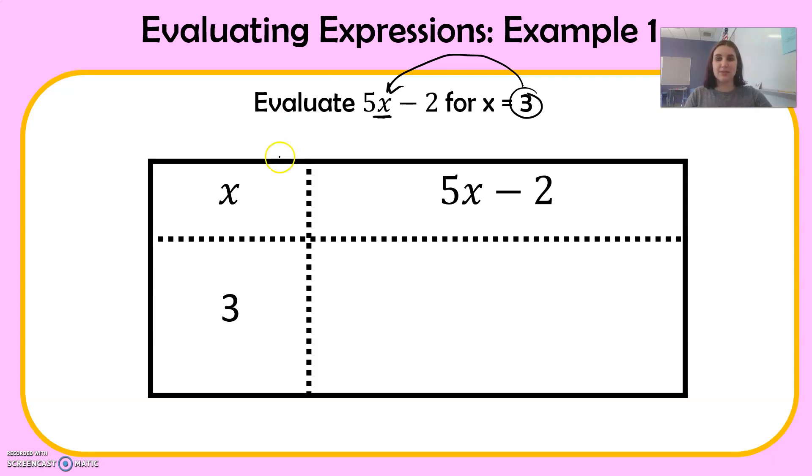And we're going to substitute this 3, this x, into 5x minus 2. So we're going to substitute it in. Ready? x is 3. 5 times 3 minus 2. So when I have these parentheses around the 3, that means we're going to multiply those numbers together. So now I'm going to follow the order of operations.